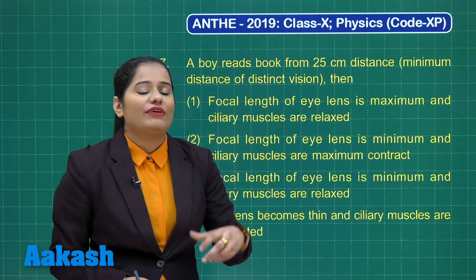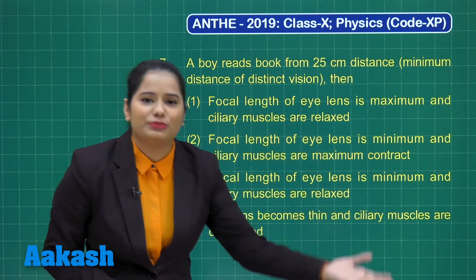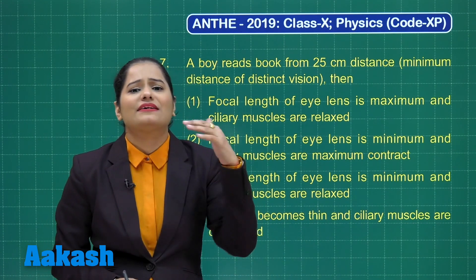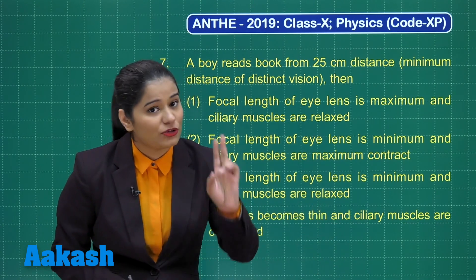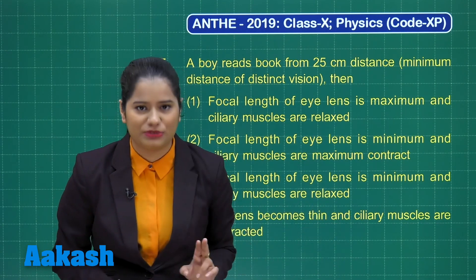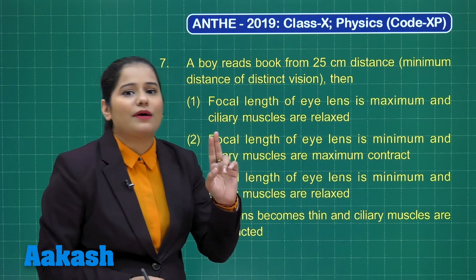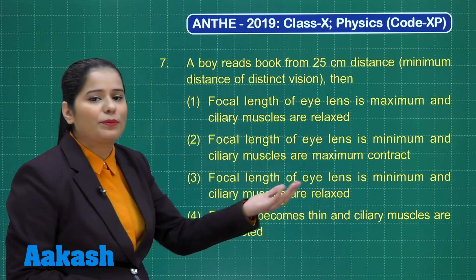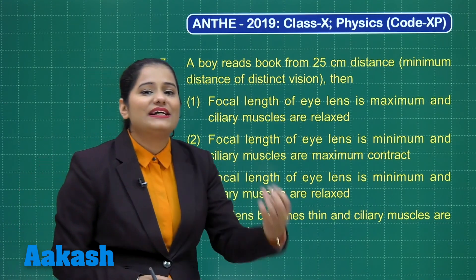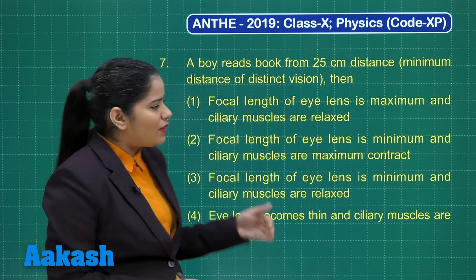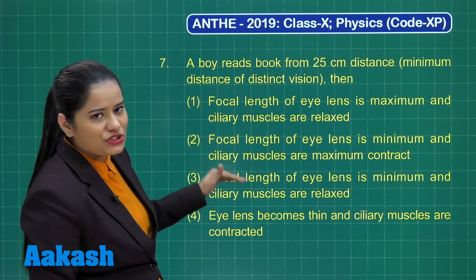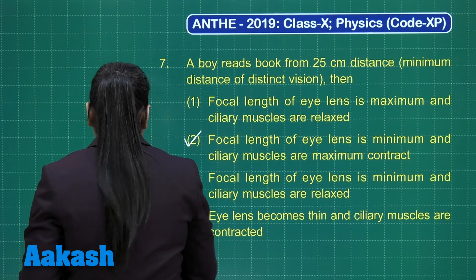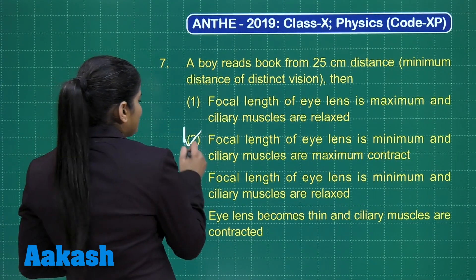When our eye focuses on a far off object, its focal length increases, the lens becomes thin and ciliary muscles are relaxed. But when we focus on a nearby object, our eye lens becomes thick, our focal length decreases or becomes shorter, and ciliary muscles are maximum strained. So out of all these given options, option 2 is the correct option, and I can mark this in the box.